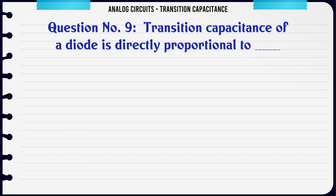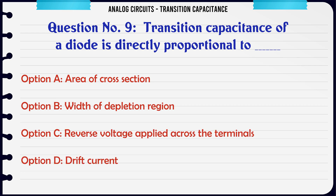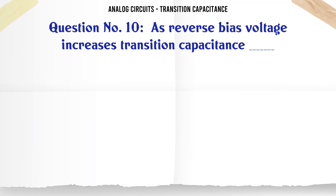Transition capacitance of a diode is directly proportional to: A: Area of cross section, B: Width of depletion region, C: Reverse voltage applied across the terminals, D: Drift current. The correct answer is Area of cross section.